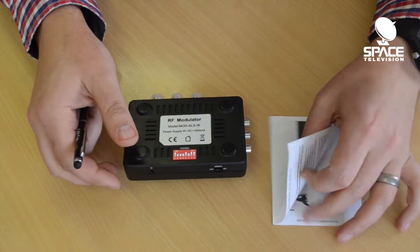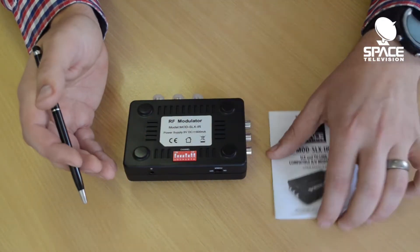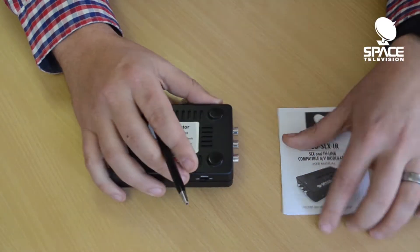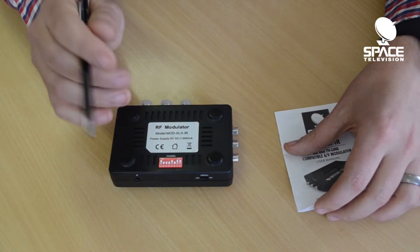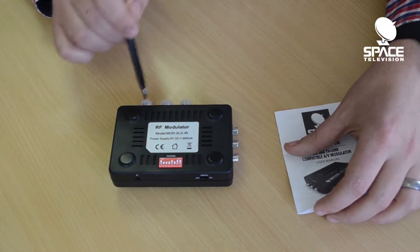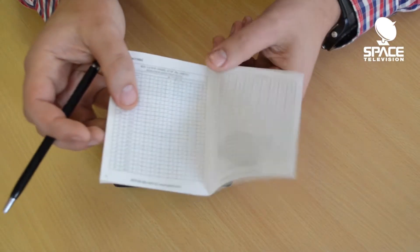So you've done your installation, given the decoder a satellite feed, and connected the AV ports to the modulator. Now we need to set the modulator to modulate that RCA signal onto one of the RF ports. Simply open up your manual.